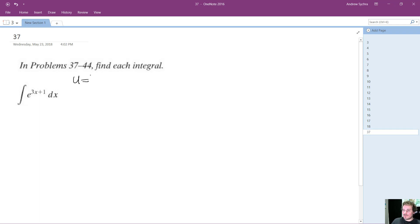We're going to set u equal to 3x plus 1, and then du is equal to 3. So du equals 3dx, because dx doesn't have a coefficient.